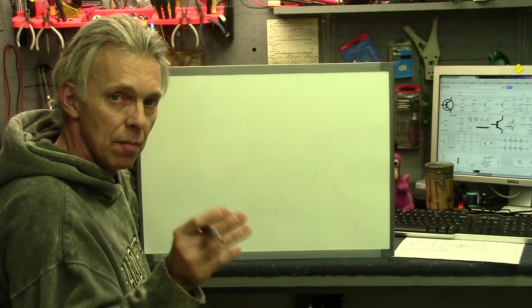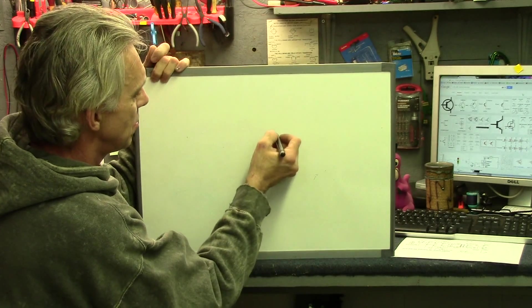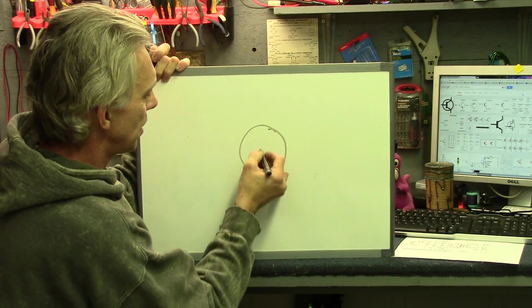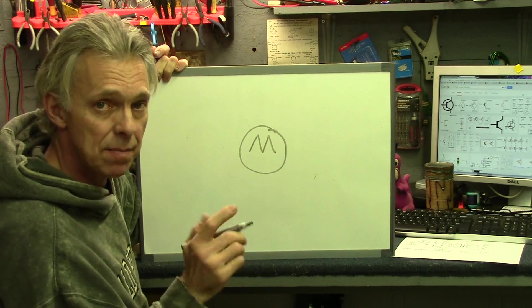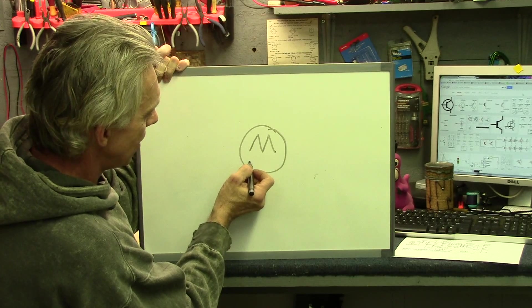Robotics use a lot of motors. A motor symbol looks like this: just a circle with a great big M in the middle. That's a motor. If it's a stepper motor, it will have a line under it that looks like this.